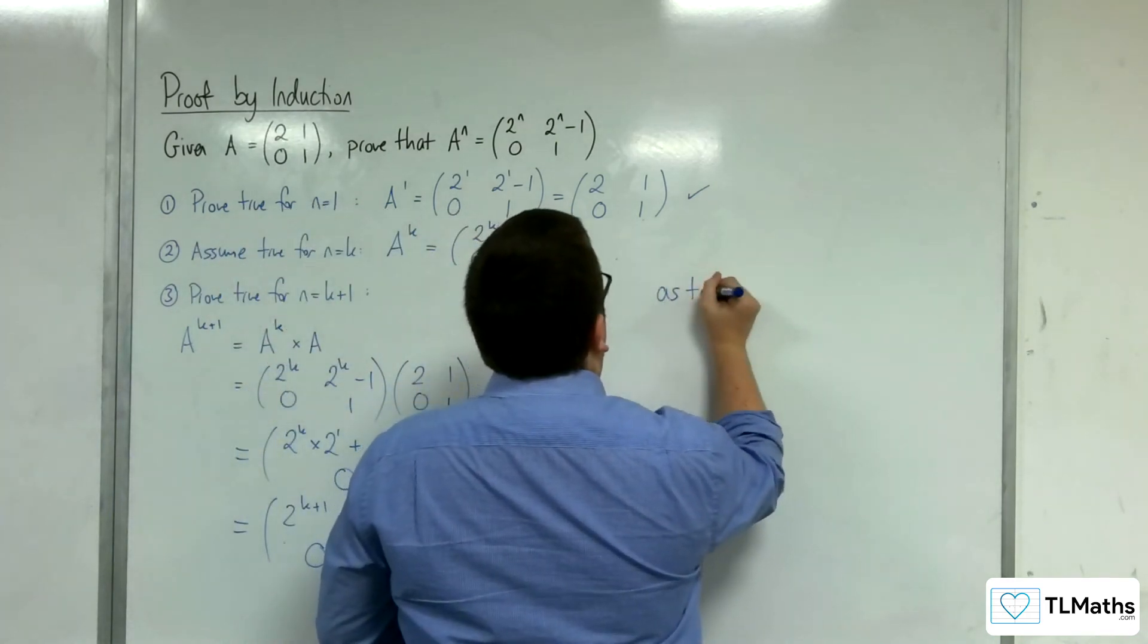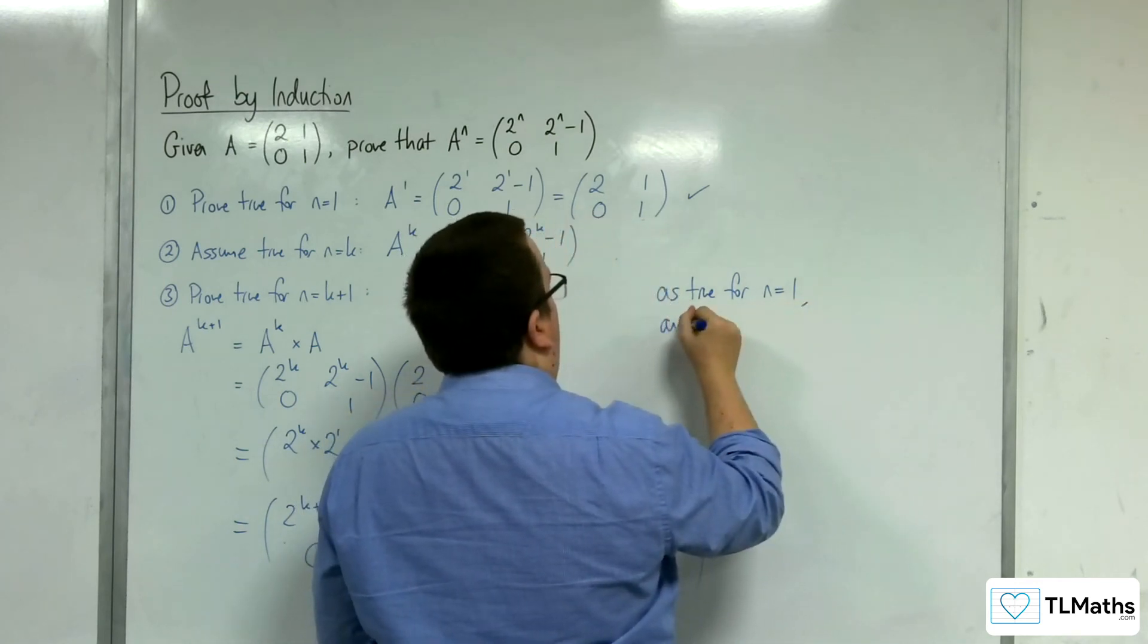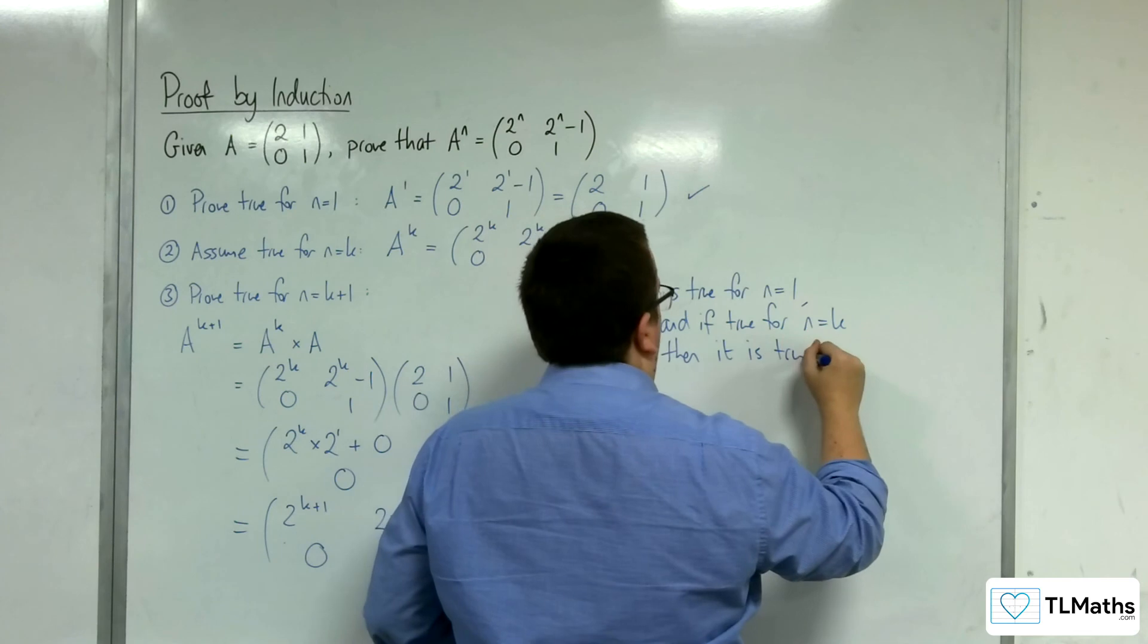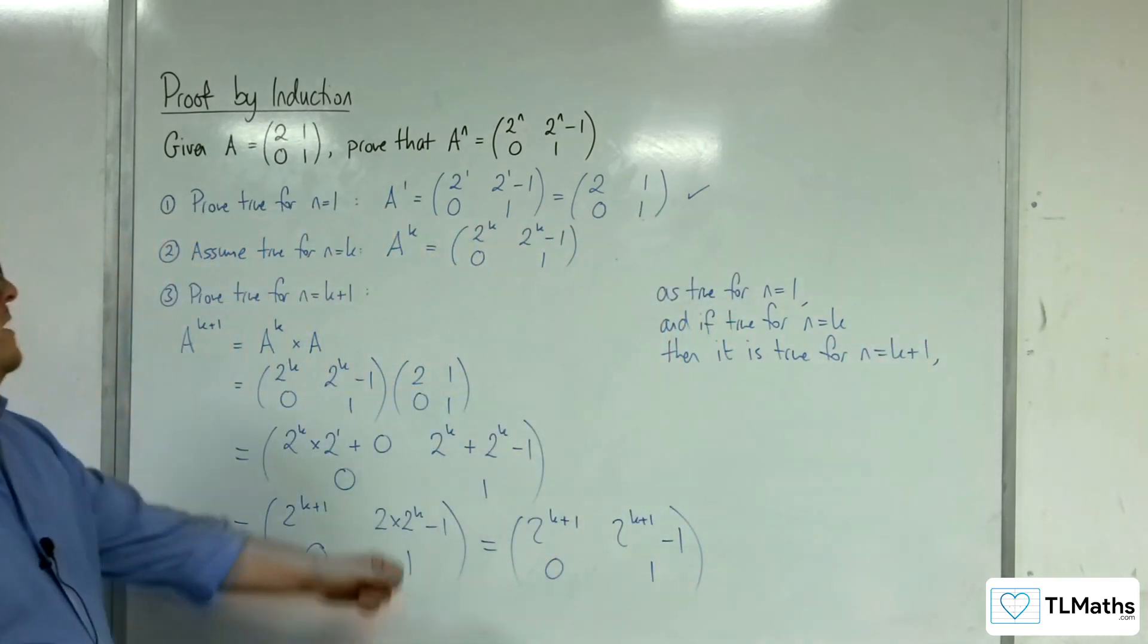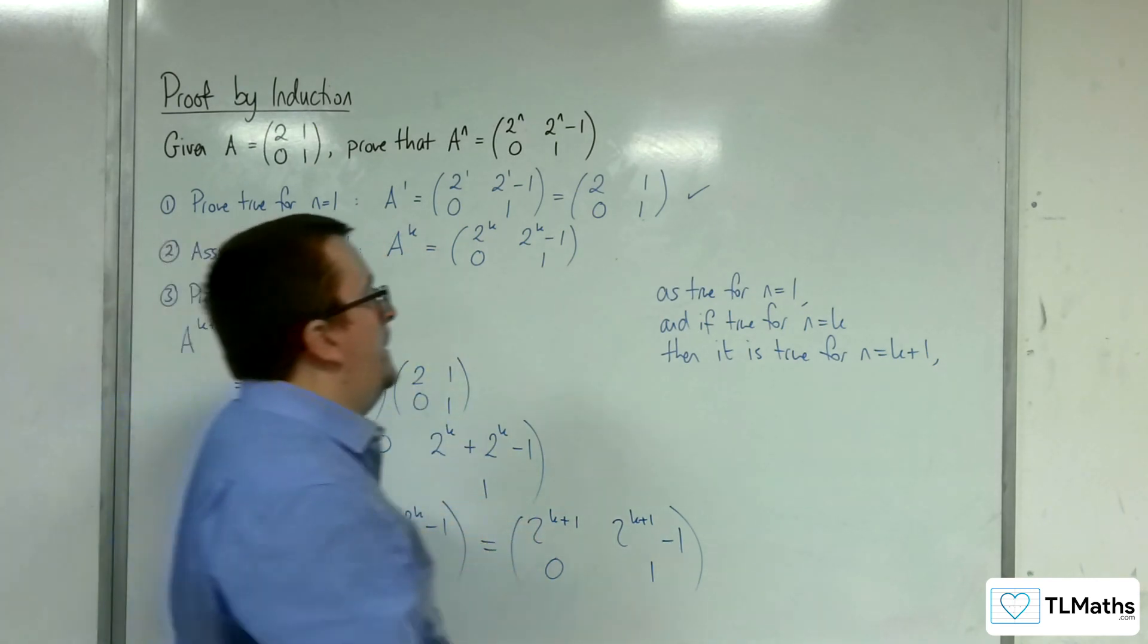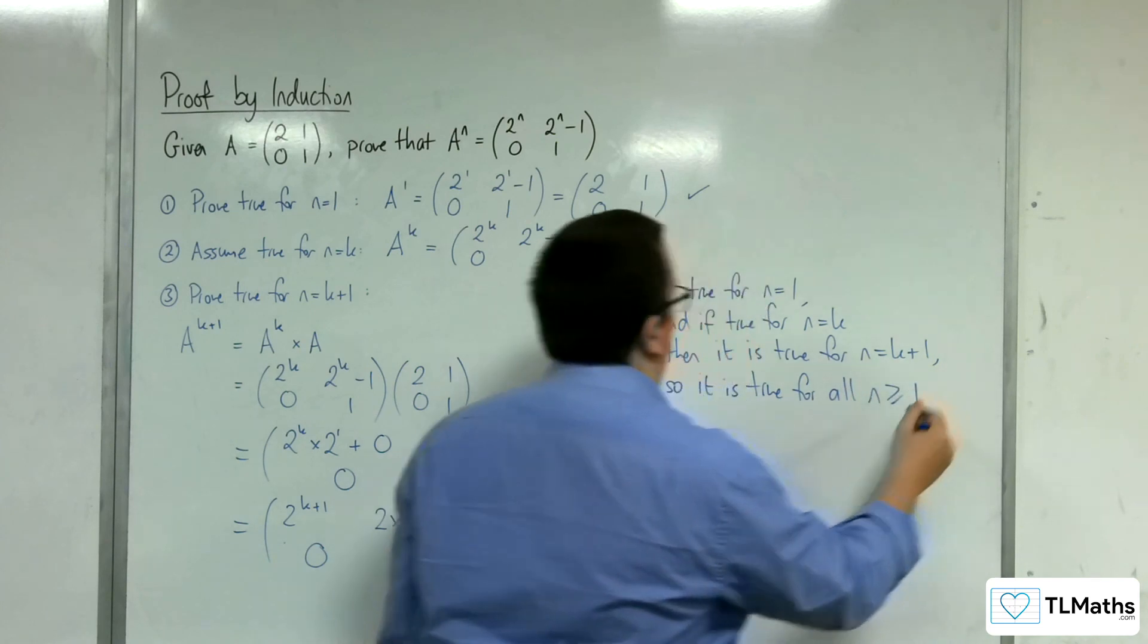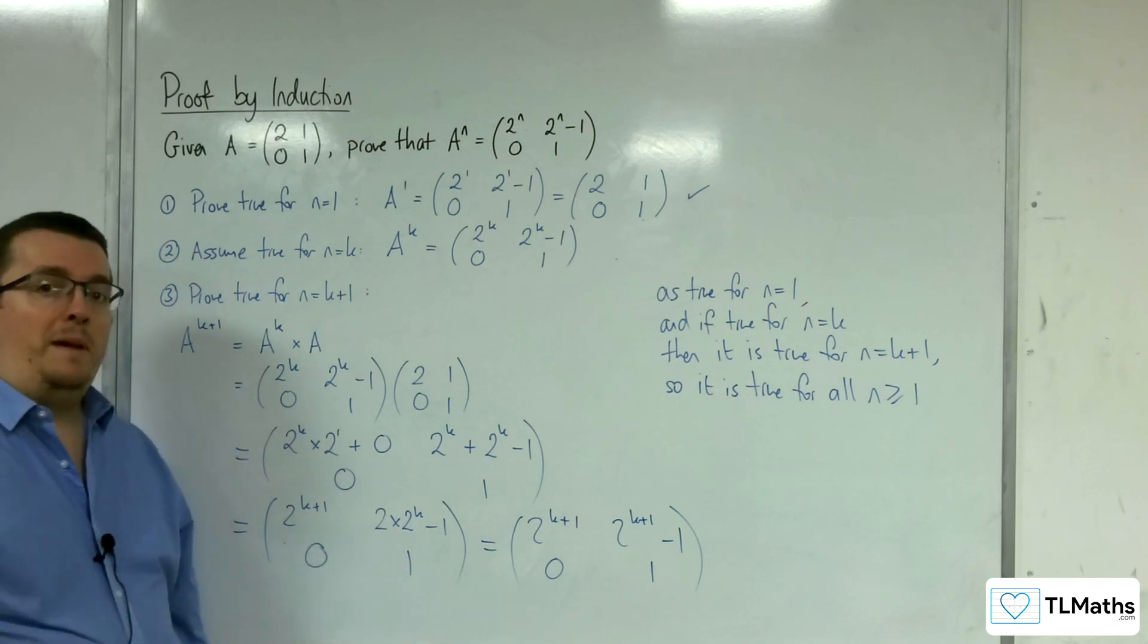It's true for n equals 1, and if true for n equals k, then it is true for n equals k plus 1. We assumed it was true for n equals k and showed that it's true if that assumption is correct. Therefore, it is true for all n greater than or equal to 1. That's how we can do proof by induction with matrices.